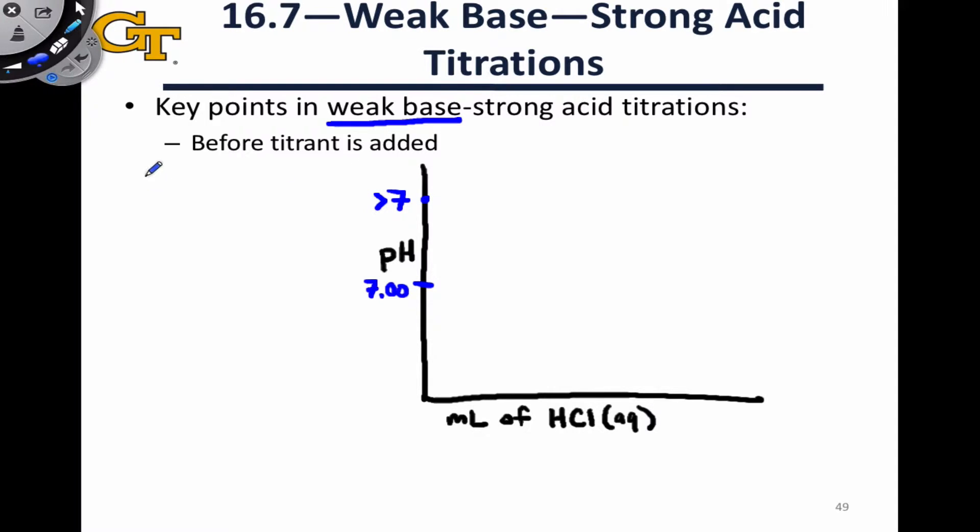Reason being we're dealing with a weak base, and so even before any titrant is added when that base is dissolved in water we're going to, to some degree, go forward to produce the conjugate acid of the weak base as well as hydroxide. This will be a reversible process because the base is weak, but it's the forward direction that drives the pH up above seven.